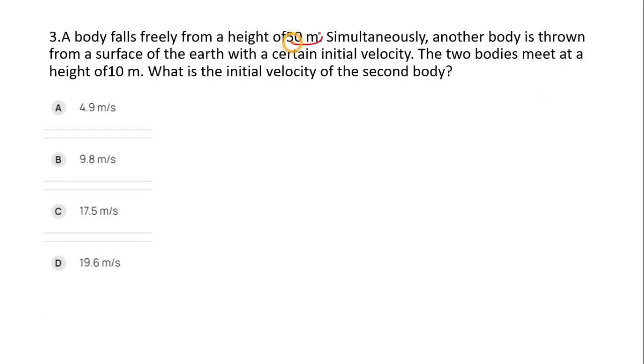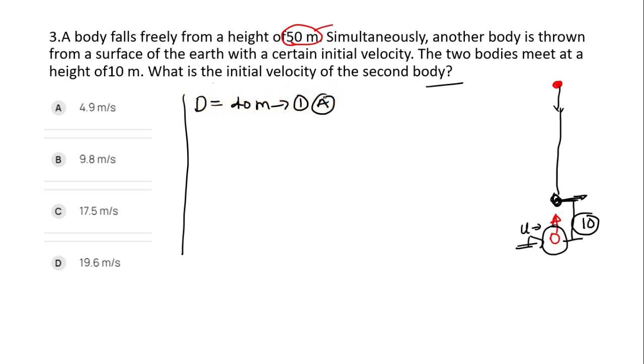Next question: a body falls freely from a height of 50 meters. Simultaneously, another body is thrown from the surface of the earth with a certain initial velocity. So another body is thrown upwards with certain velocity. If you consider initial velocity u for this body and it is freely falling, now two bodies meet at a height of 10 meters. What is the initial velocity of the second body? We have to find out the initial velocity of the second body.